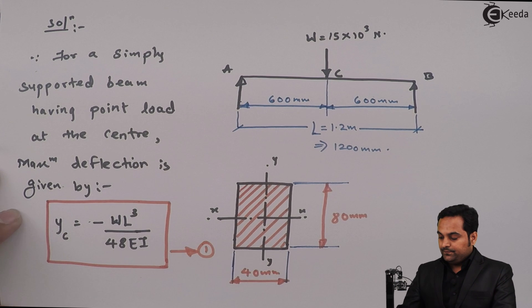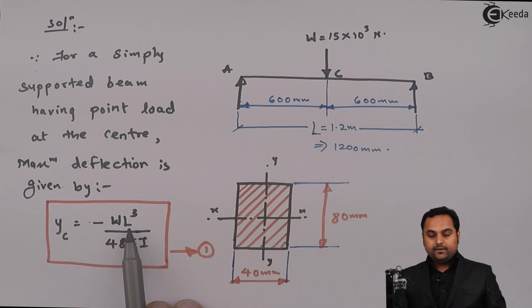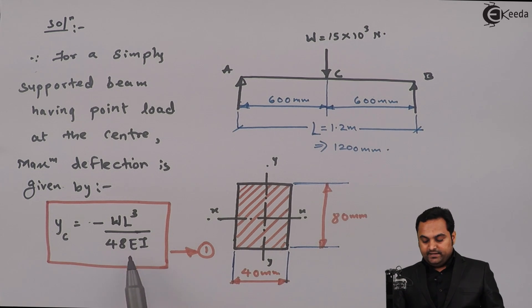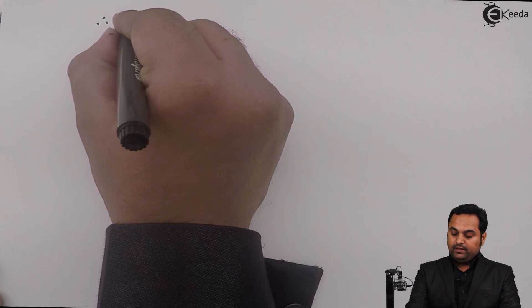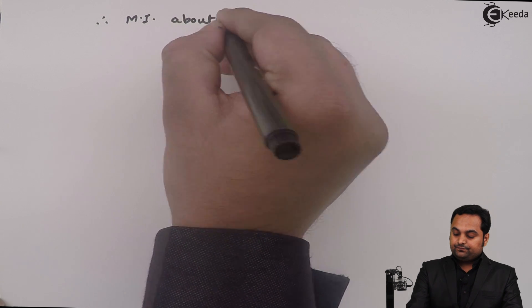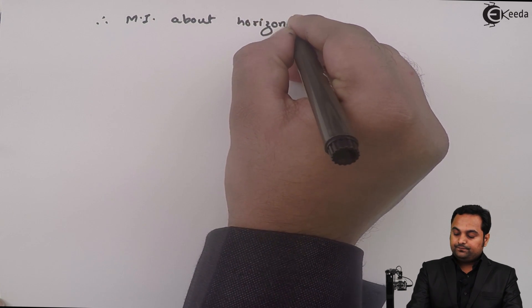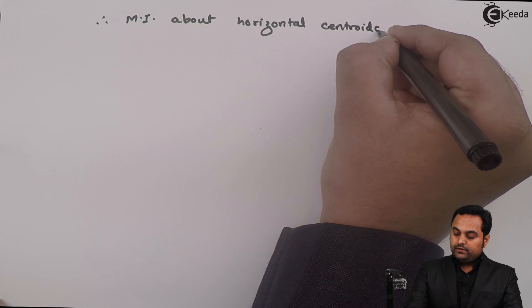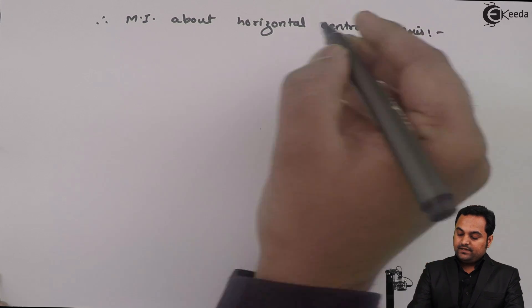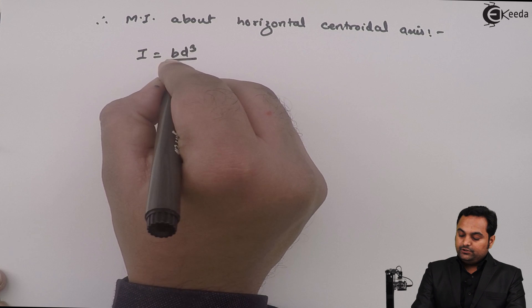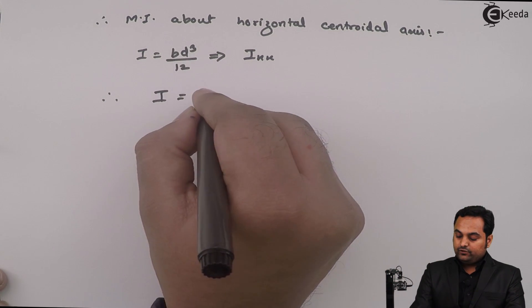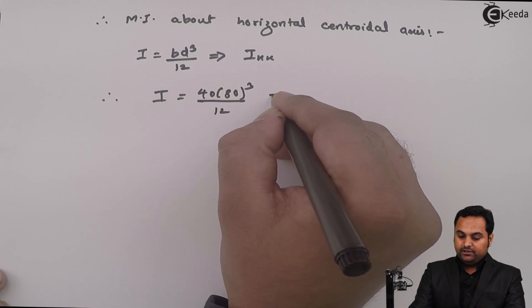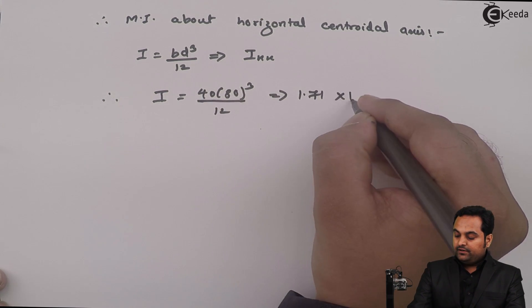Here we have the W value and the L value; the only unknown is I. E is also given. So I is the moment of inertia about the horizontal centroidal axis, given by I = BD³ / 12. Therefore, I = (40 × 80³) / 12, which comes out to be 1.71 × 10⁶ mm⁴.